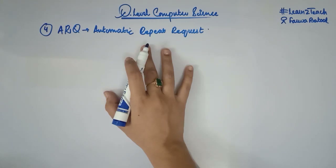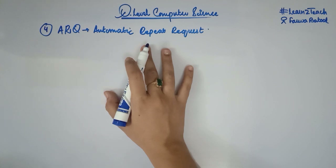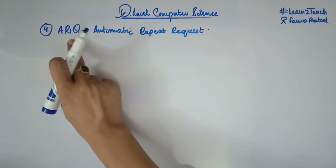Hello everyone, this is Farwa Batool and welcome to the course of O-level computer science. We were looking at error detection and correction methods used in data transmission to check whether the data is transmitted correctly or not. In this video I am going to share another method with you — that is ARQ.